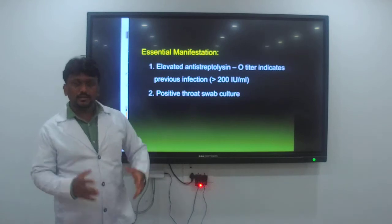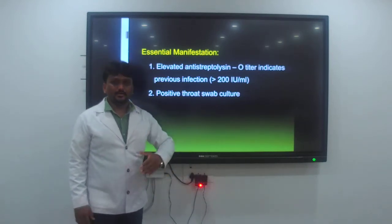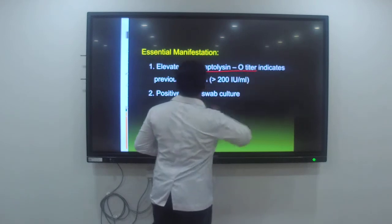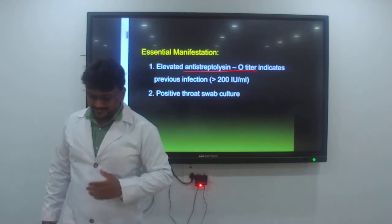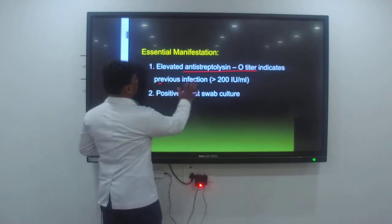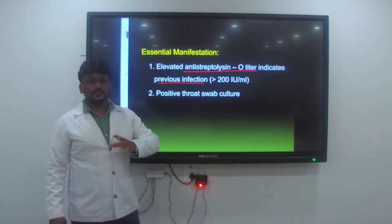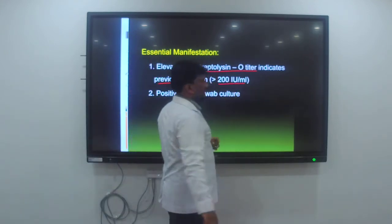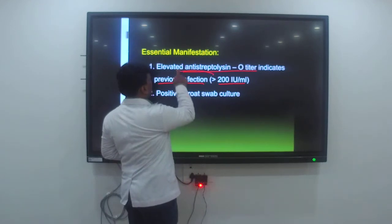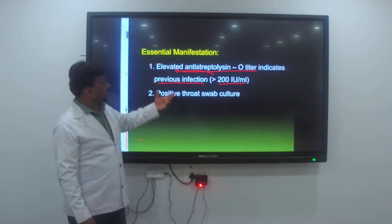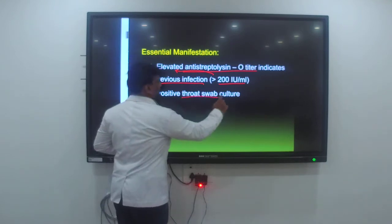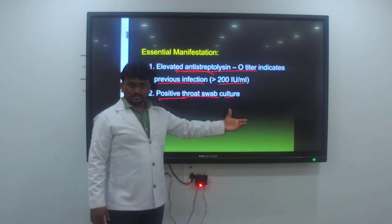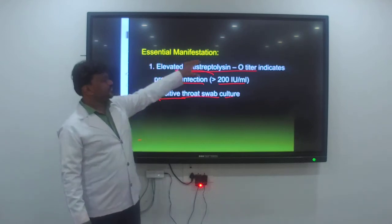The essential manifestations include two things: elevated anti-streptolysin O titer, with a normal range of 200 international units per mL — if more than that, it indicates previous streptococcal infection; and a positive throat swab culture for streptococcus.